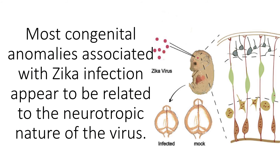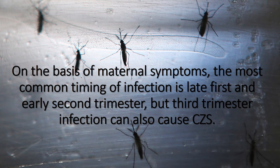Most congenital anomalies associated with Zika infection appear to be related to the neurotropic nature of the virus. On the basis of maternal symptoms, the most common timing of infection is late first and early second trimester, but third trimester infection can also cause congenital Zika syndrome.